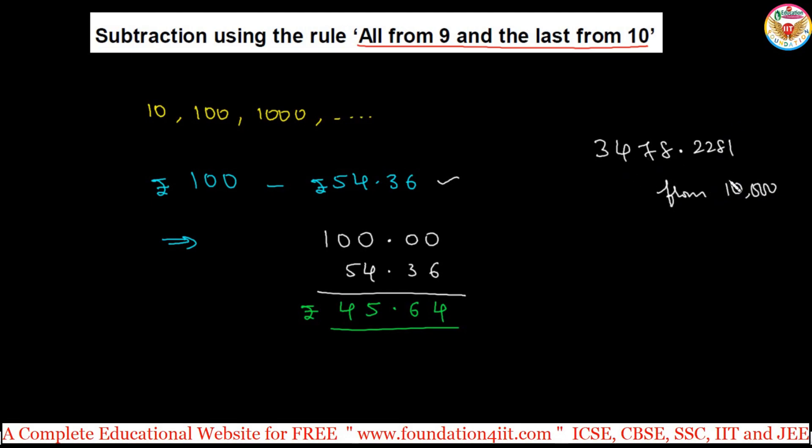This number, subtract from 10,000. Just by calculating in mind also we can do it, but anyway I'll write this step here first. So 10,000 point four decimals - just four zeros you can keep.